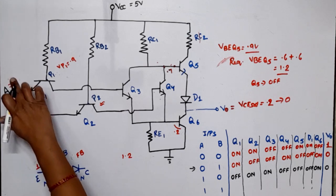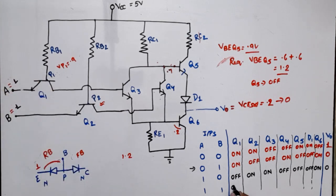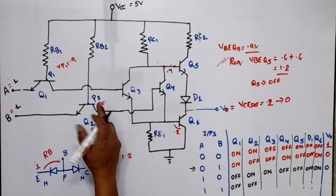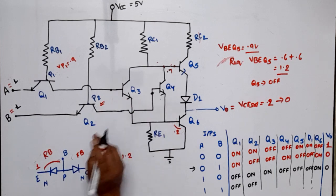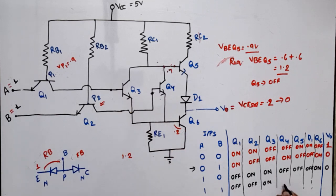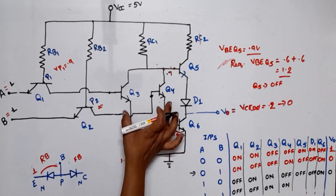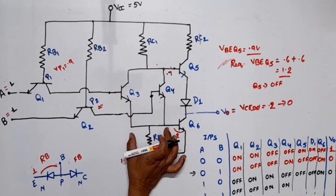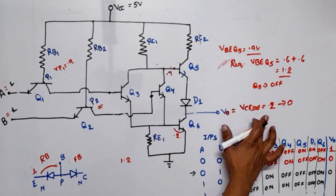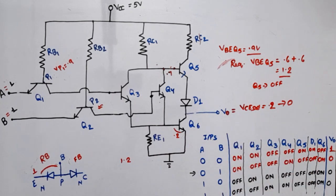Fourth case: both inputs equal to 1. If both inputs are 1, then Q1 will be OFF and Q2 will also be OFF. When both input transistors are OFF, sufficient voltage — approximately 5 volts — is applied at both branches, so Q3 will be ON and Q4 will be ON. With both Q3 and Q4 ON, sufficient current flows to the emitter of Q6, turning Q6 ON. If Q6 is ON, then Q5 and D1 will be OFF. Since Q6 is ON, the output will be 0.2 volts, which is logic 0.